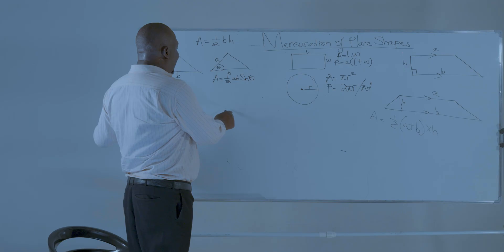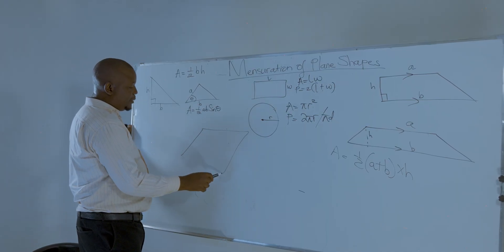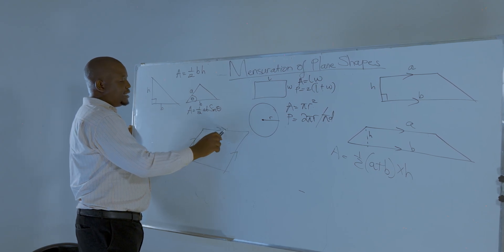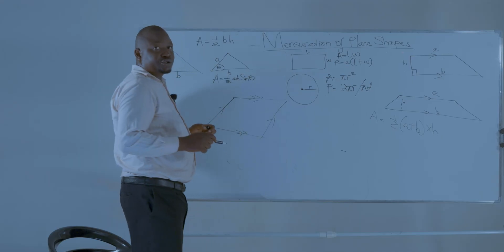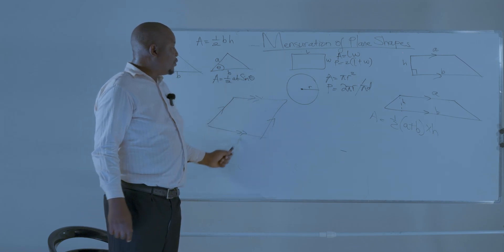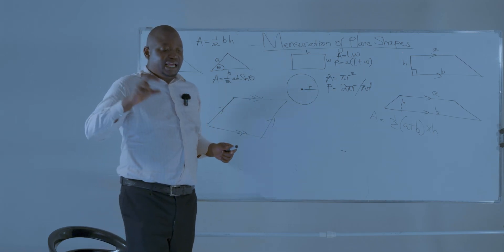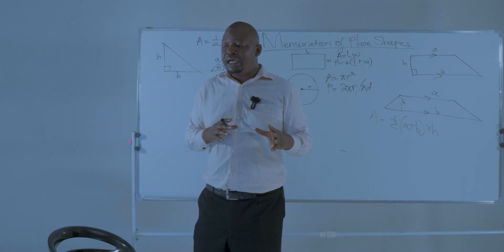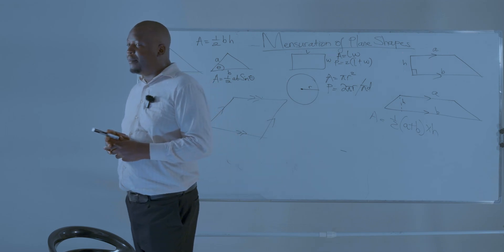Next, we have the parallelogram. The parallelogram has got a set of parallel sides and another set of parallel sides. So in the parallelogram, these sides are equal and those sides are also equal. Then if it's a regular parallelogram where all the sides are equal, it has got a special name. It's known as the rhombus.